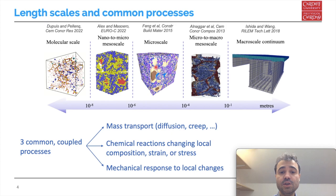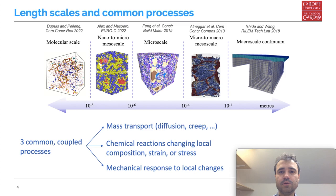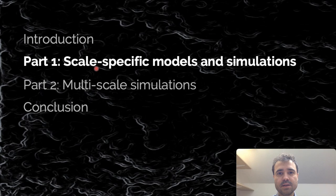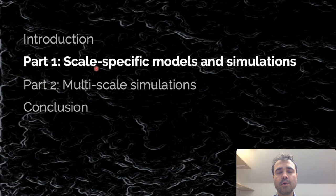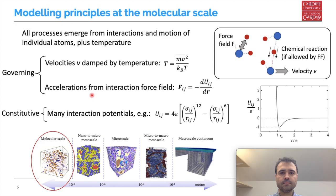If we want to observe how each phase has its own morphologies — for example the CSH gel with its inner gel porosity which cannot be resolved at the microscale — then we push further down into the nano-to-micro mesoscale. And finally, if we want to resolve how each phase or each interface between different phases is behaving, we can look atom by atom in molecular simulations at the molecular scale. The second part of the talk will show examples from the literature where simulations at different scales have been combined in true multi-scale efforts, and then I'll draw some conclusions.